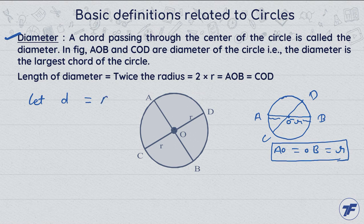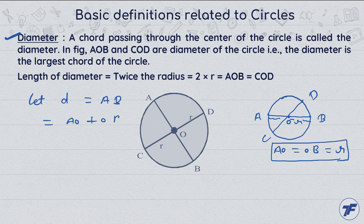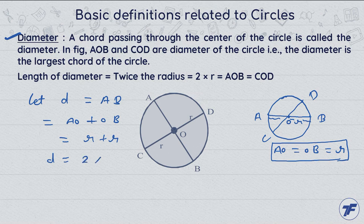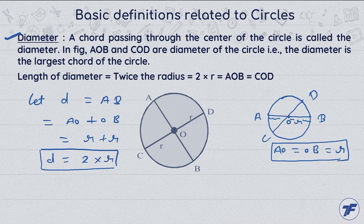means d, d means AB, d means length of AB. AB की length कितनी हो जाएगी? AO plus OB. It means r plus r and d equal to two times the radius. It means diameter is always double of the radius.